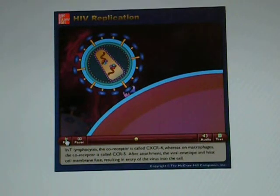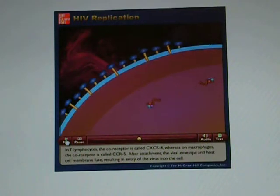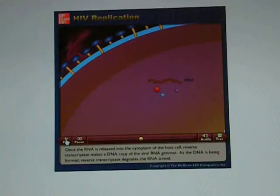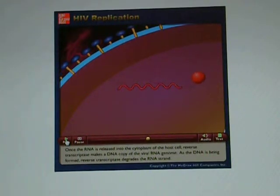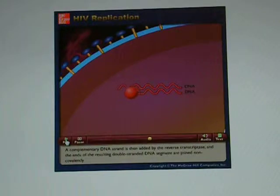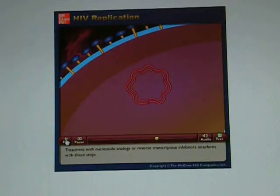After attachment, the viral envelope and host cell membrane fuse, resulting in entry of the virus into the cell. Once the RNA is released into the cytoplasm of the host cell, reverse transcriptase makes a DNA copy of the viral RNA genome. As the DNA is being formed, reverse transcriptase degrades the RNA strand. A complementary DNA strand is then added by the reverse transcriptase, and the ends of the resulting double-stranded DNA segment are joined noncovalently. Treatment with nucleoside analogs or reverse transcriptase inhibitors interferes with these steps.